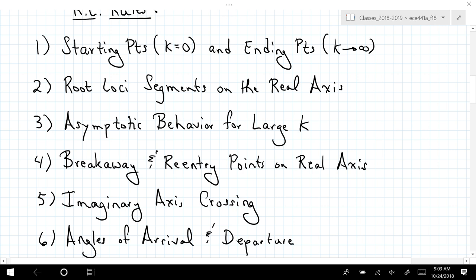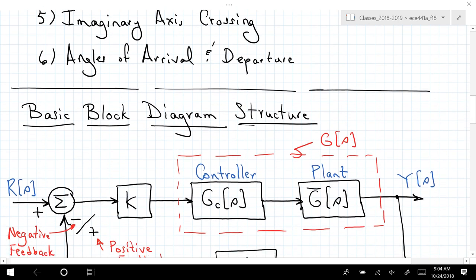The rules cover: where do we start and end the branches of the root locus? Are there segments on the real line that belong to the root locus? What does the root locus do as k gets very large — what's its asymptotic behavior? Does the root locus break away from or re-enter the real line? Does it cross the imaginary axis? And for complex conjugate poles and zeros, how does the root locus approach those zeros or depart from the poles?